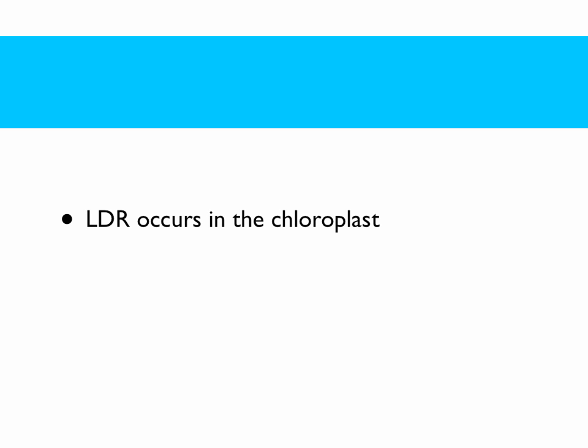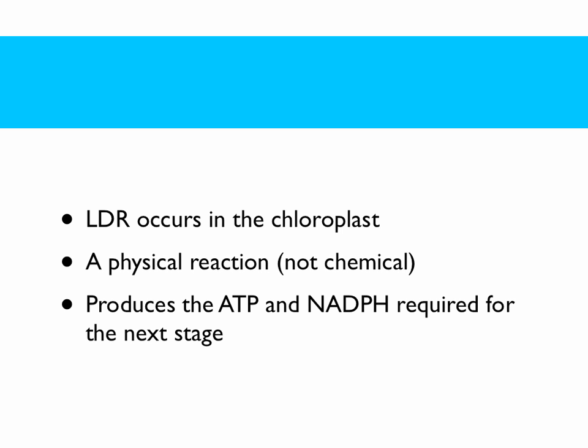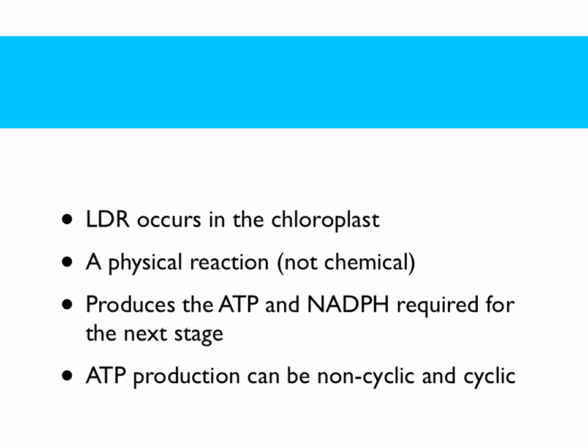The light-dependent reaction occurs in the chloroplast. It's a physical reaction, not chemical. It produces ATP and NADPH, which are required for the next stage of photosynthesis. And ATP production can be non-cyclic or cyclic.